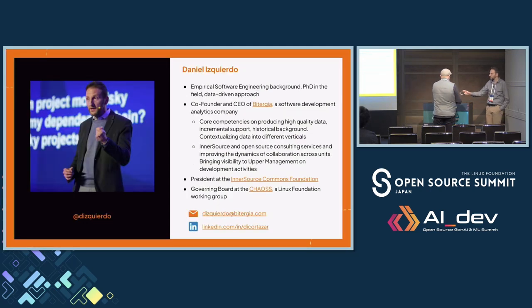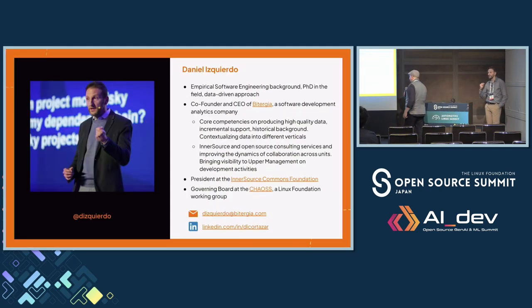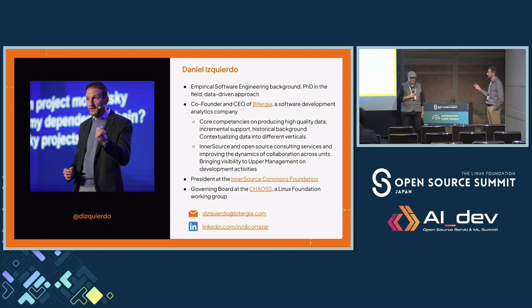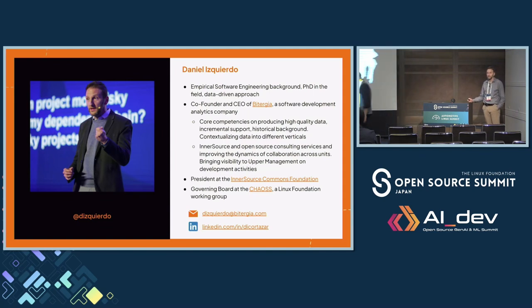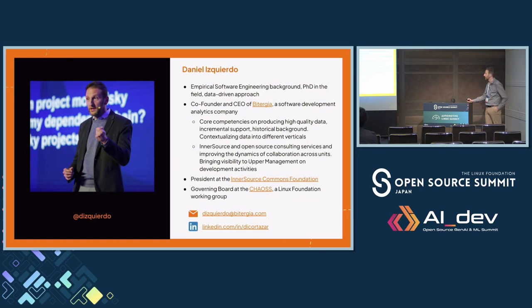My name is Daniel Izquierdo. I come from academia. I co-founded Vitergia, which is a development analytics company. Then I'm president of the Inner Source Commons Foundation. I'm working in a couple of extra communities, such as CHAOS — Community Health Analytics for Open Source Software.